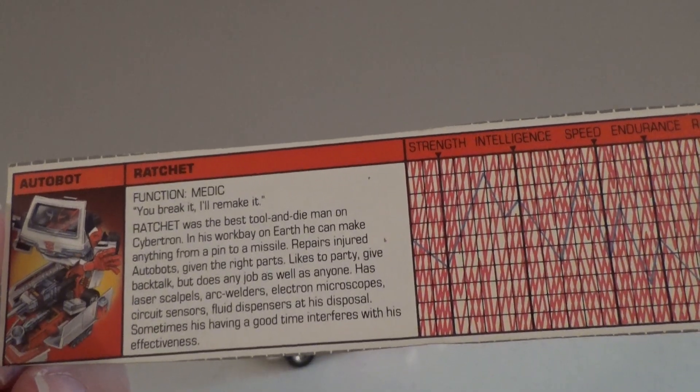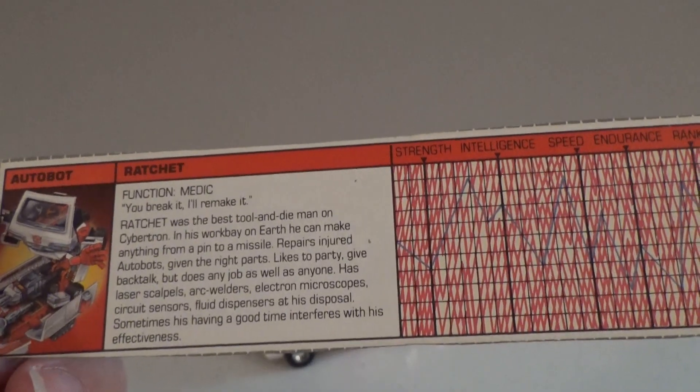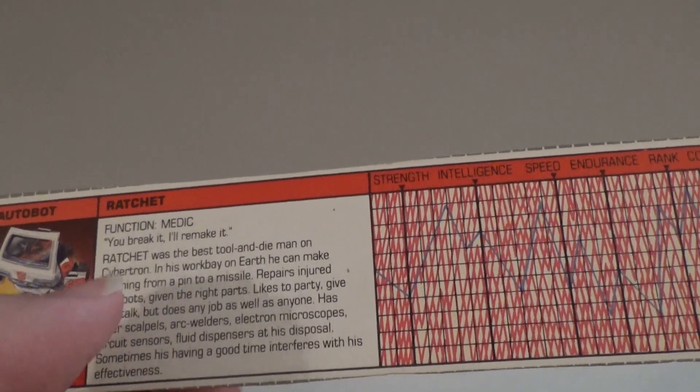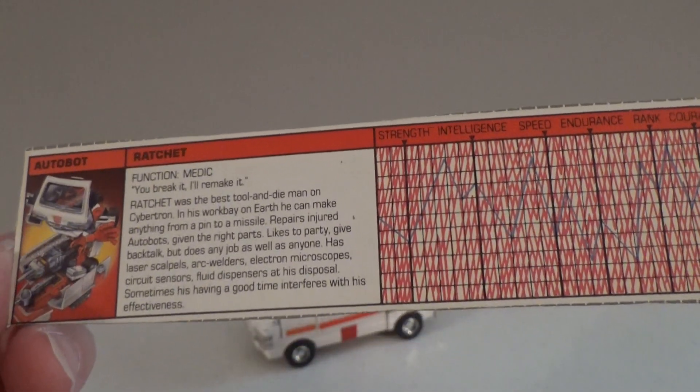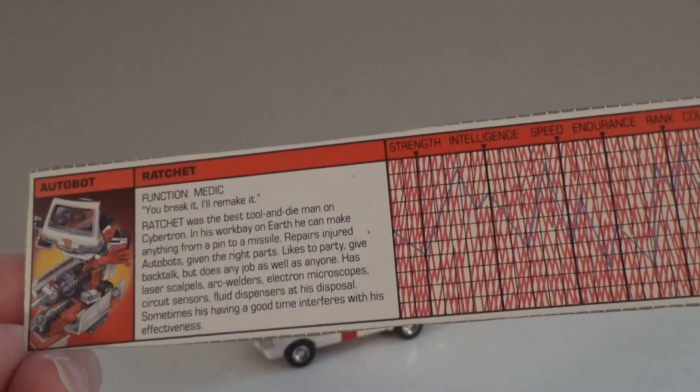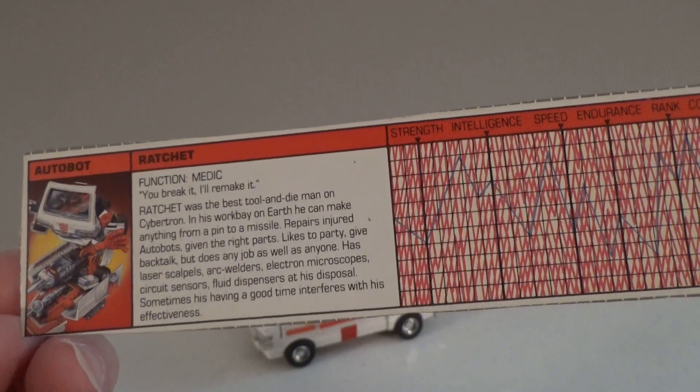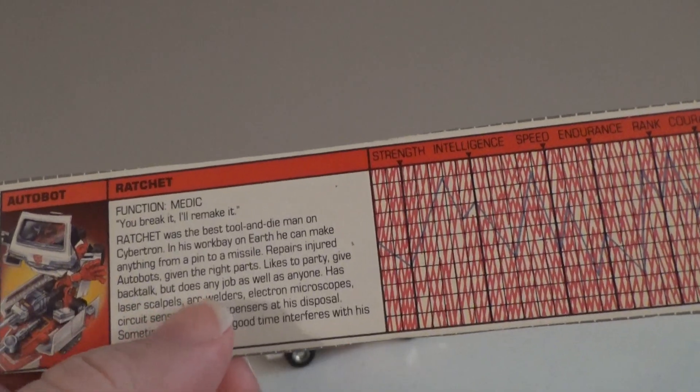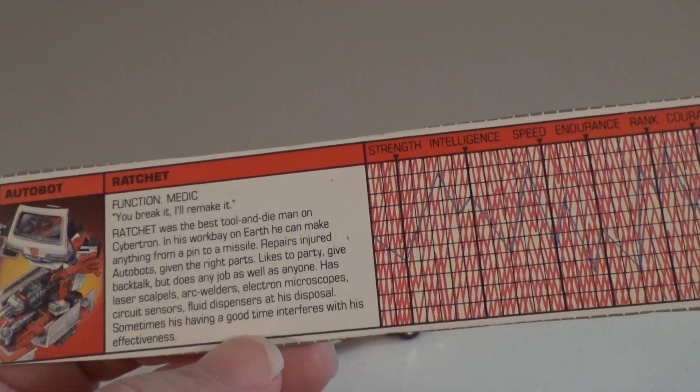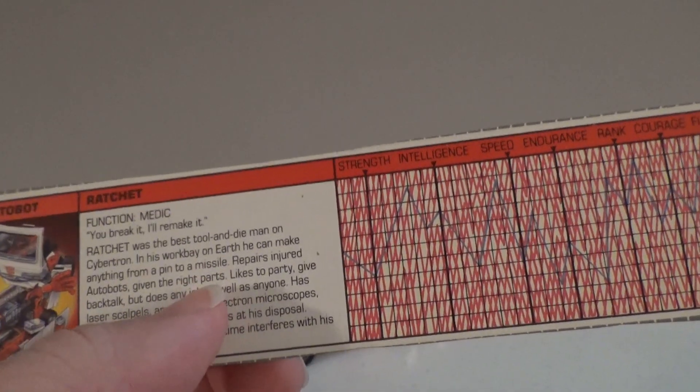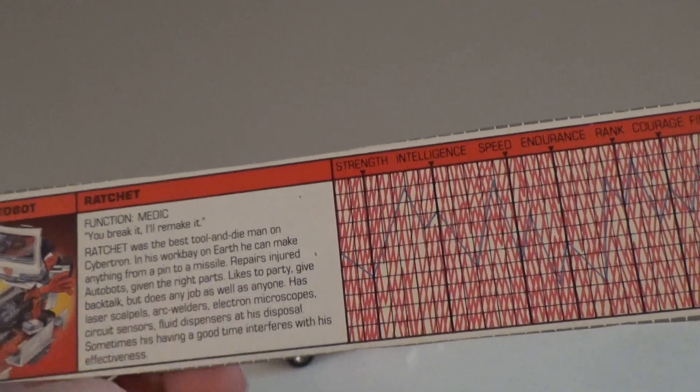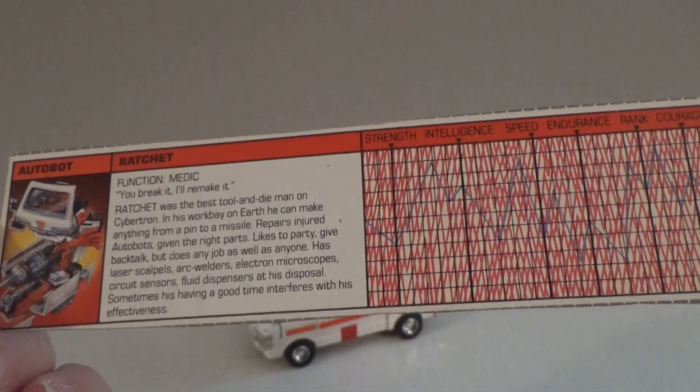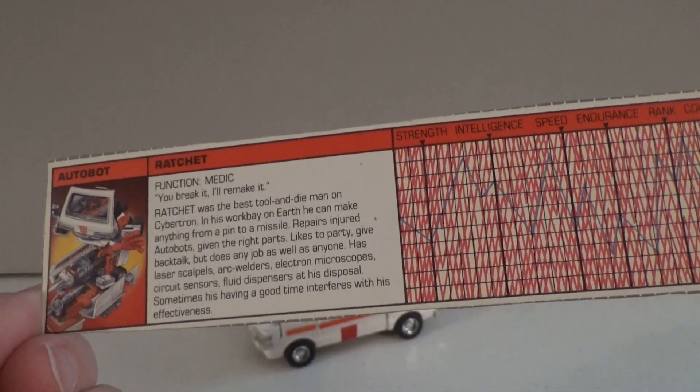Ratchet was the best tool and die man on Cybertron. In his workbay on Earth, he can make anything from a pin to a missile. This almost makes him sound like he's just as much of an engineer as Ratchet and Wheeljack is. Repairs injured Autobots, given the right parts. Likes to party, give back talk, but does any job as well as anyone. I can partially agree with this. I do love to give some back talk to people. Not much on parties, but hey, to each their own.